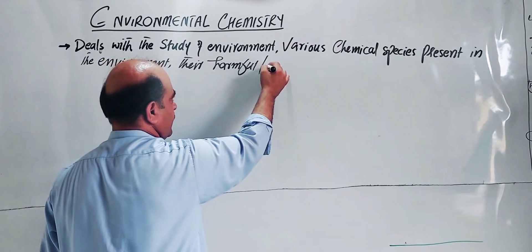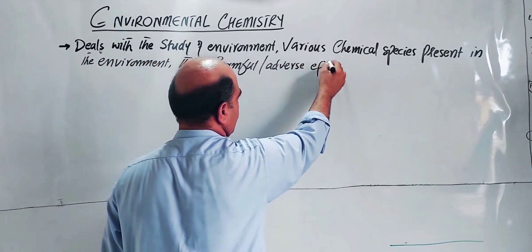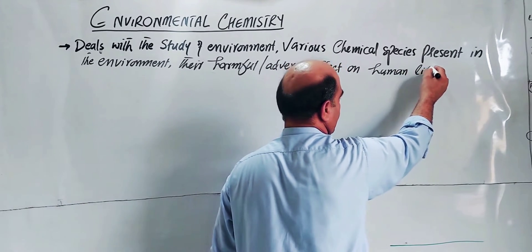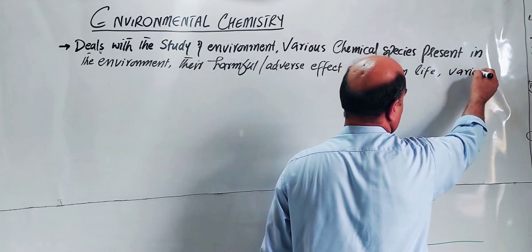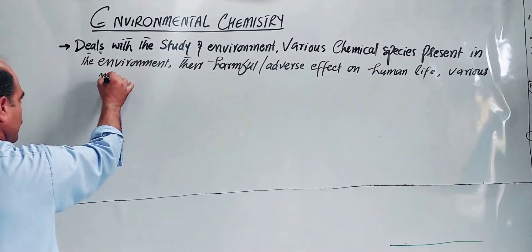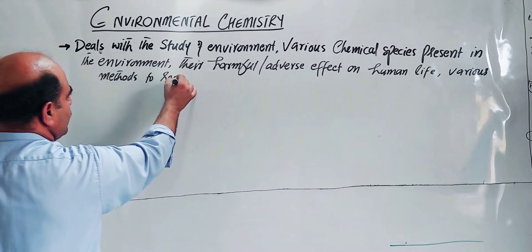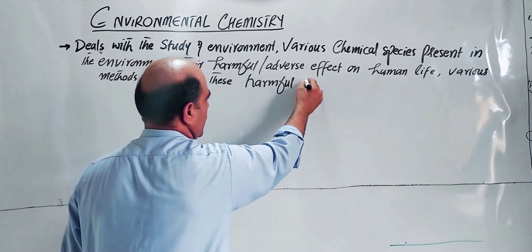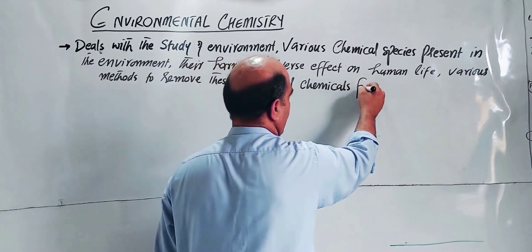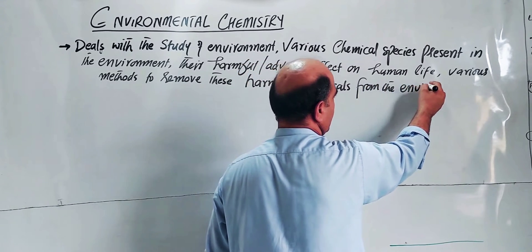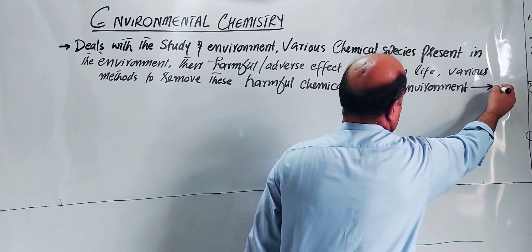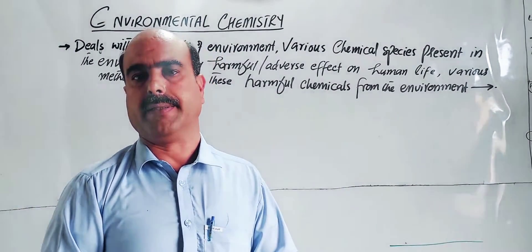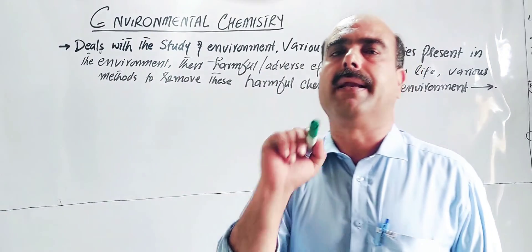Environmental chemistry studies the effects of various chemical species present in the environment on everyone's life, and the various methods to remove these hazardous chemicals from the environment. The main focus of environmental chemistry is to study that branch of chemistry which deals with the study of the environment — that is called environmental chemistry.